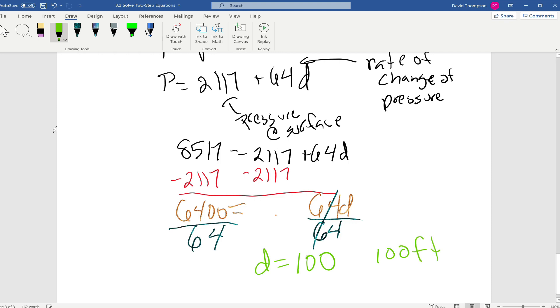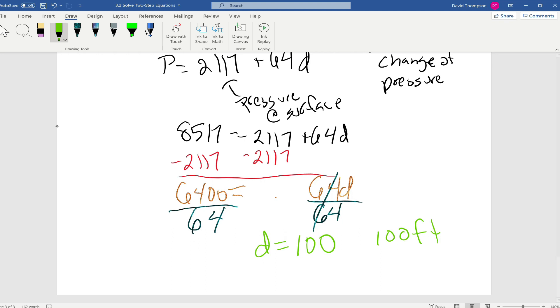Let me just plug into our original equation to confirm. 2,117 plus 64 times 100. And that'll be 2,117 plus 6,400. And 2,117 plus 6,400 does give me 8,517. And we're done. So we're done solving for our equation. Hopefully this helps you understand how to solve two-step equations. See you in the next video when we talk about solving multi-step equations.